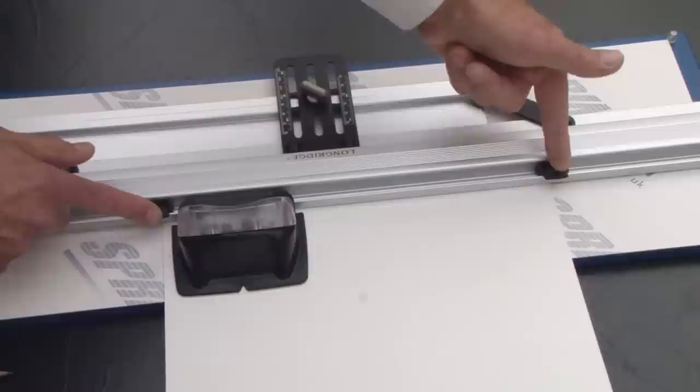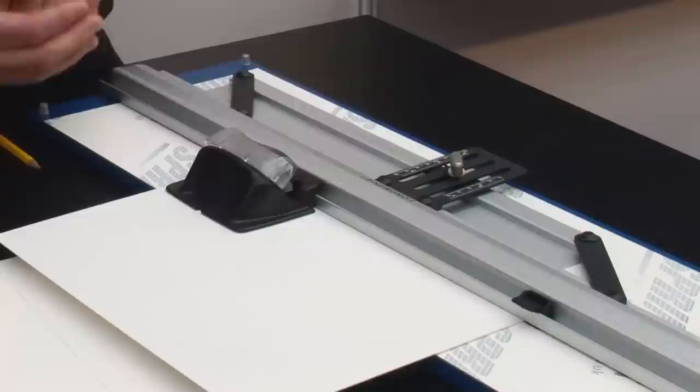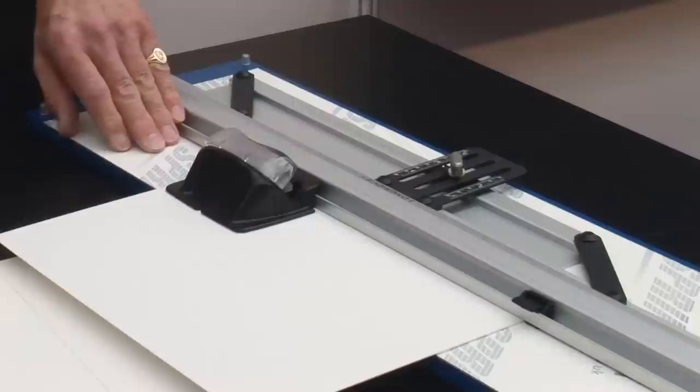I've set the scale here, I've set the stops so I can repeat the same size of all the long cuts for a series of mounts so it makes it very efficient when you need to do several of the same size. There are several advantages of the TRIO, the repeat without marking and there's no need to actually line up the pencil line, the system does it for you.